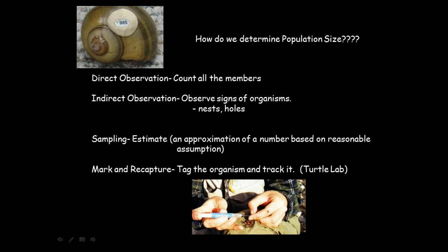The first thing we have to do is we have to be able to determine a population size, and there are four methods that we're going to talk about. The first one, and probably the easiest to do, is to actually just go out and count all the members of a particular area. We could go out into the woods, block off a certain area, and count the number of birds found there. That would be a very easy method to do.